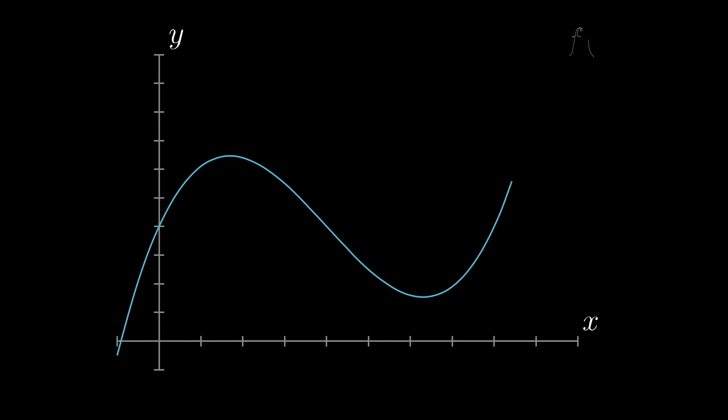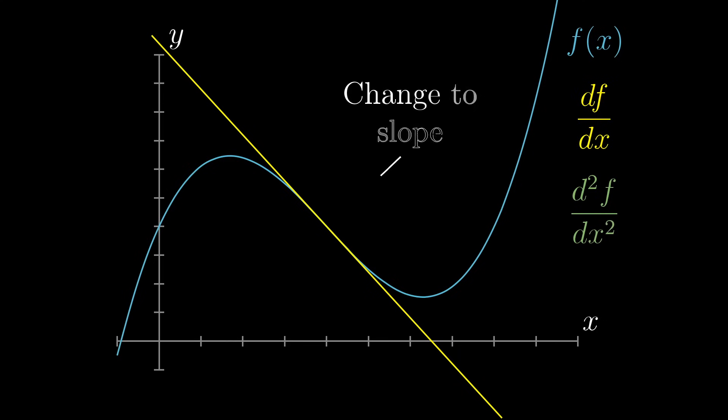Given some function f, the derivative can be interpreted as the slope of this graph above some point, right? A steep slope means a high value for the derivative, a downward slope means a negative derivative. So the second derivative, whose notation I'll explain in just a moment, is the derivative of the derivative, meaning it tells you how that slope is changing.